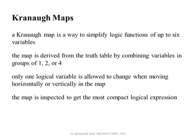I will show a technique — Karnaugh maps — that works well for up to six variables; beyond that, software algorithms are needed. Karnaugh maps can be built from the truth table. You know the truth table — the function is either logic one or logic zero for different combinations of the input variables. We derive the Karnaugh map from the truth table by combining variables into groups of one, two, or four, and allowing only one logic variable to change from one column to another or from one row to another.